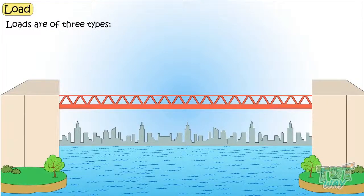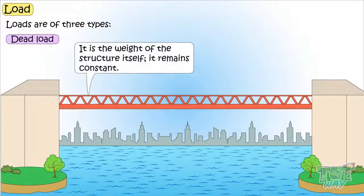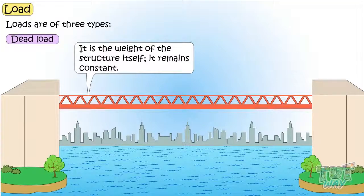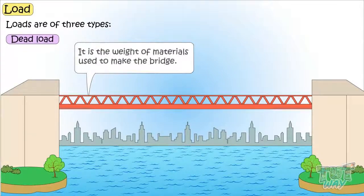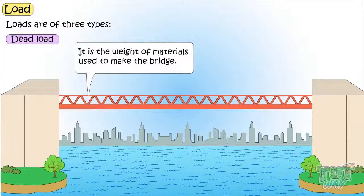The first one is dead load. It is the weight of the structure itself. It remains constant. For example, it is the weight of materials used to make the bridge. So the dead load of the bridge is the weight of the bridge itself.